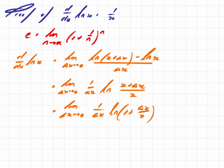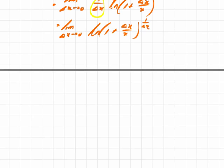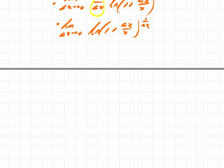Now I can use the property of exponents and take 1 over delta x and make it the power. So that's the limit as delta x approaches 0 of the natural log of 1 plus delta x over x, to the power 1 over delta x. Now, we're going to do one of those things that might not come too naturally.